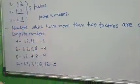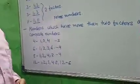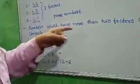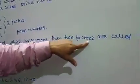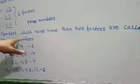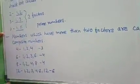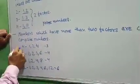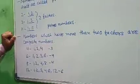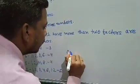According to our definition, the numbers having more than two factors are called composite numbers. So four, six, eight, and twelve are called composite numbers.